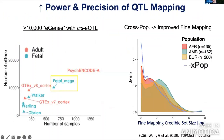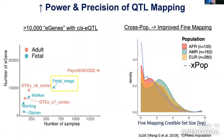These are critical biological processes relevant to many disorders we study. With this large-scale reference panel, we now have greater power to detect QTL mapping, detecting over 10,000 e-genes with significant cis-eQTLs at strict significance cutoffs. We can also leverage allelic diversity across multiple ancestral populations for cross-population fine mapping, yielding much smaller credible set sizes around causal QTL variants, giving greater precision in identifying true variants with allelic effects.